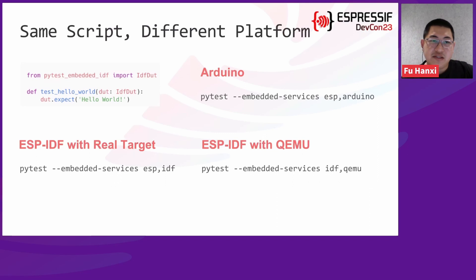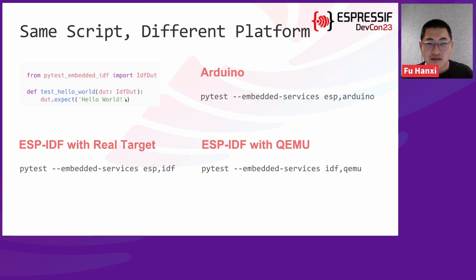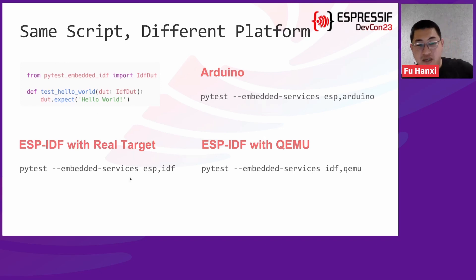This slide shows that we can use one script to test on different platforms. This is a simple basic test function called test_hello_world, which simply expects the 'hello world' string from the serial output or the QEMU output. For example, if running on the Arduino platform, we pass the parameter --embedded-services esp-arduino. For ESP-IDF with a real target, we pass the parameter esp-idf. With QEMU, we pass the parameter idf,qemu. Different parameters enable different modules, which internally call different functions.